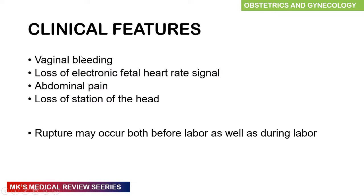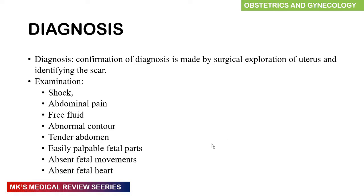Clinical features of uterine rupture include vaginal bleeding — making it one of the causes of antepartum hemorrhage — loss of the electronic fetal heart rate signal, abdominal pain, and loss of station of the head. The rupture may occur before labor starts or during the process of labor.